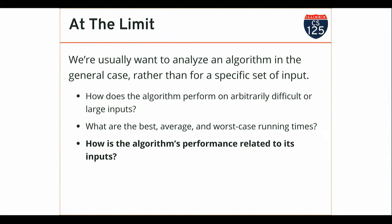One of the first things we do when applying big O notation is ask: what is N? What feature of the problem is going to drive performance? Sometimes algorithms have multiple inputs where one has no effect on performance and the other does. For example, looking for a value in an array — the runtime has no dependence on the element I'm looking for, but has a strong dependence on how many items I have to look through.